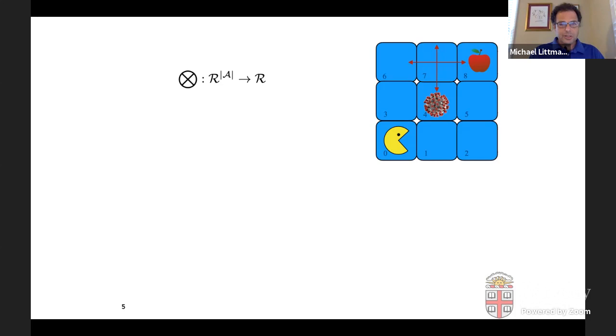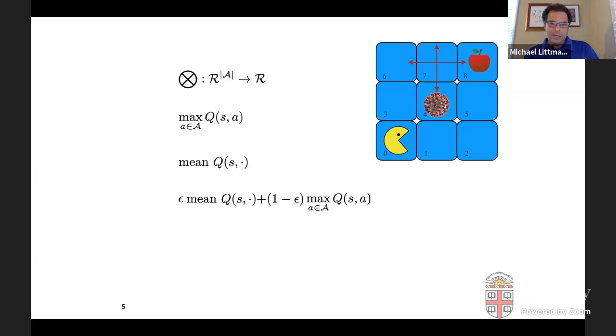So we're mapping a vector over actions to a single scalar. And the Q learning Bellman equation optimality sort of notion is that we're going to assign the value to be that maximum value over all the actions. But you can also take the mean, like if I'm behaving randomly, then my value for being in that state is going to be the average of the values of those actions. Or maybe I could be epsilon greedy, right? So epsilon greedy says that with some large probability, one minus epsilon, I'm going to take the maximum action and we're going to get that expected value. But with some small probability, we're going to take the mean value over all the actions.